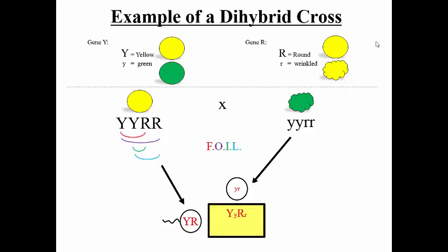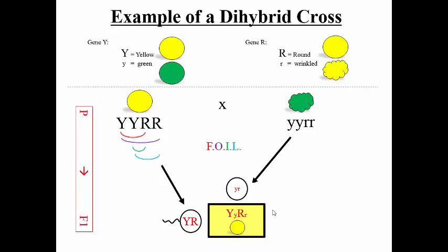If you FOIL the organism on the right, you get little y, little r eggs. Let's do the Punnett square — unite those gametes and you get big Y, little y, big R, little r. This organism has one big Y, so it's going to be yellow because big Y is dominant to little y. It has at least one big R, so it's going to be round because big R is dominant to little r. This seed should be round and yellow. We've taken it all the way from P generation to F1, doing 'Great Genetics Please Oo' once all the way through.